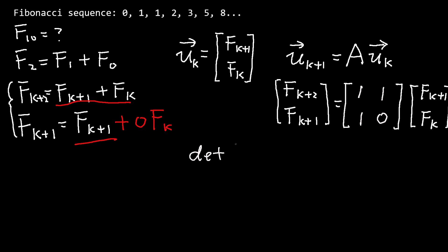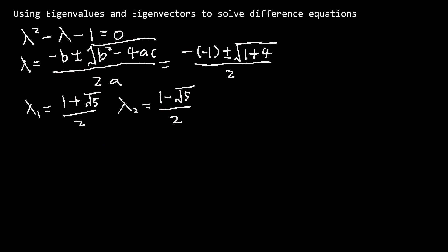Let's compute the eigenvalues and eigenvectors for A. The eigenvalues are computed by setting the determinant of A minus lambda times the identity matrix to zero. Applying the quadratic formula, we have lambda_1 equal to (1 + sqrt(5))/2 and lambda_2 equal to (1 - sqrt(5))/2.